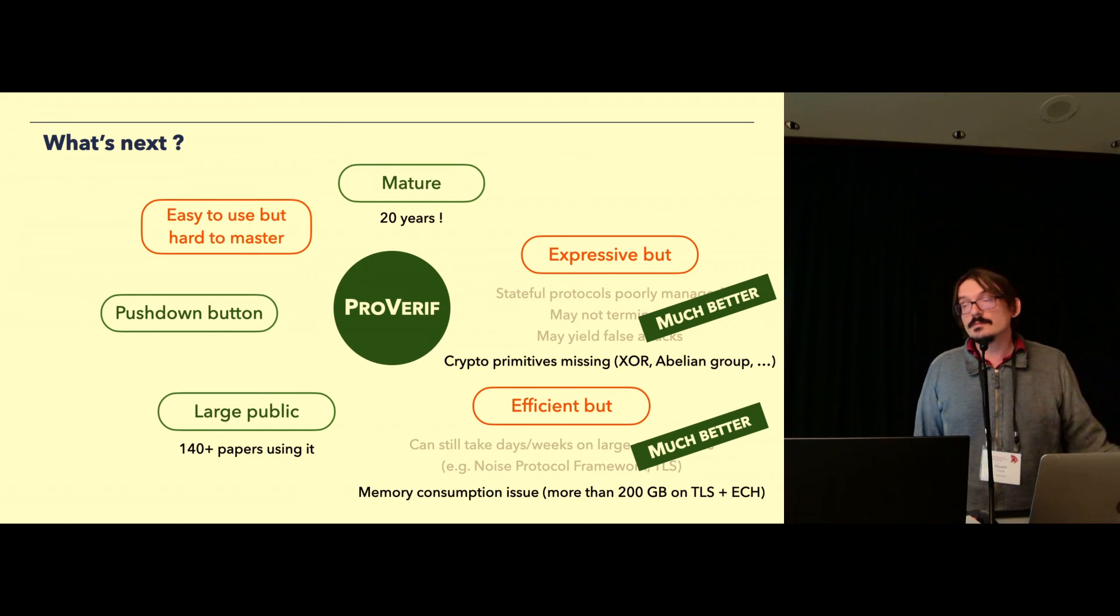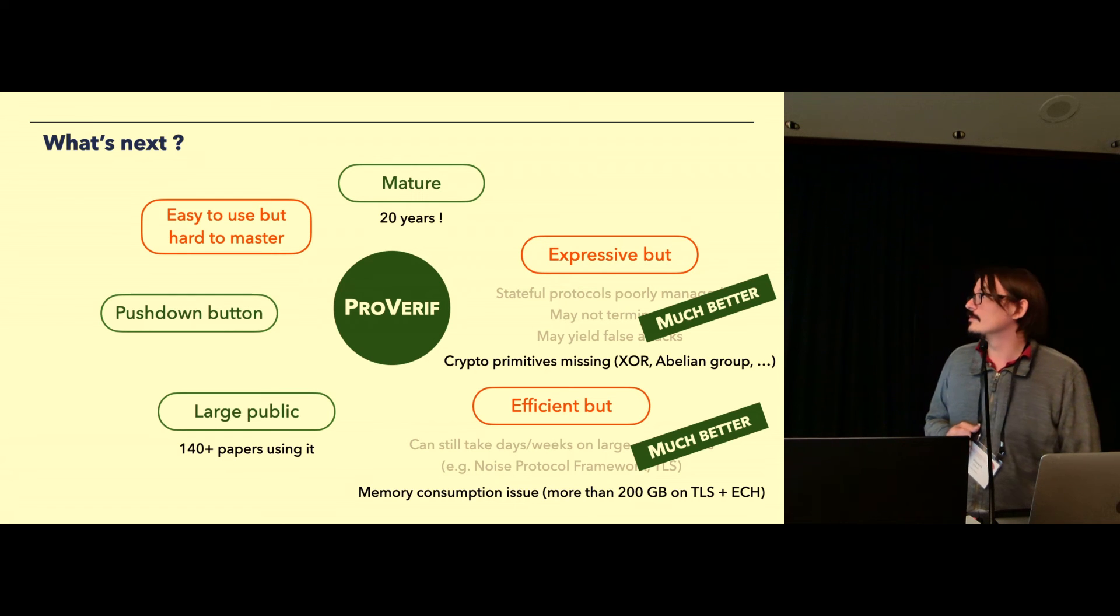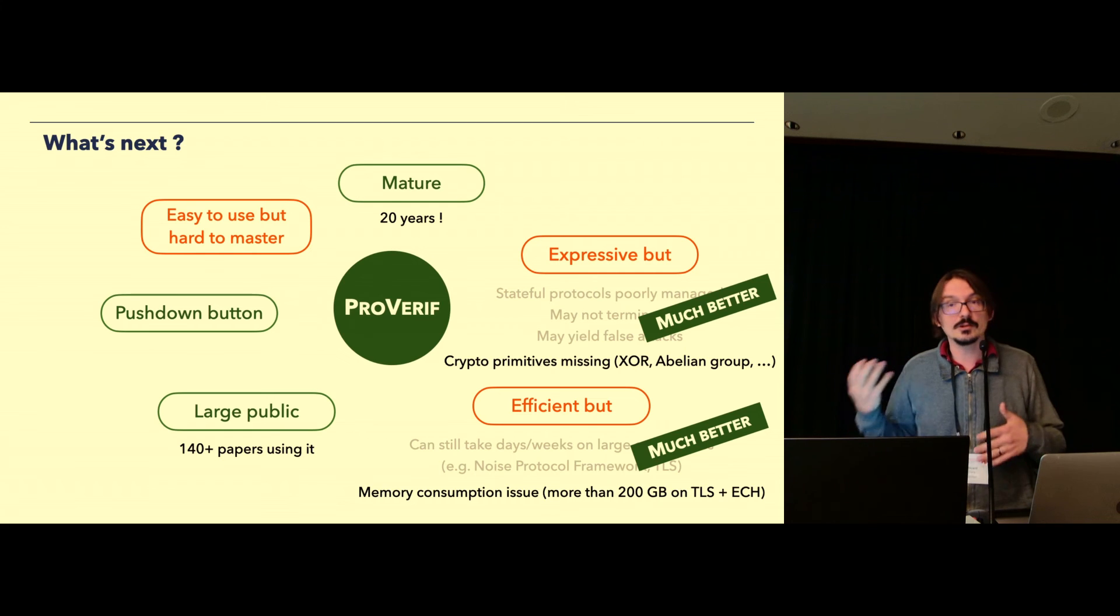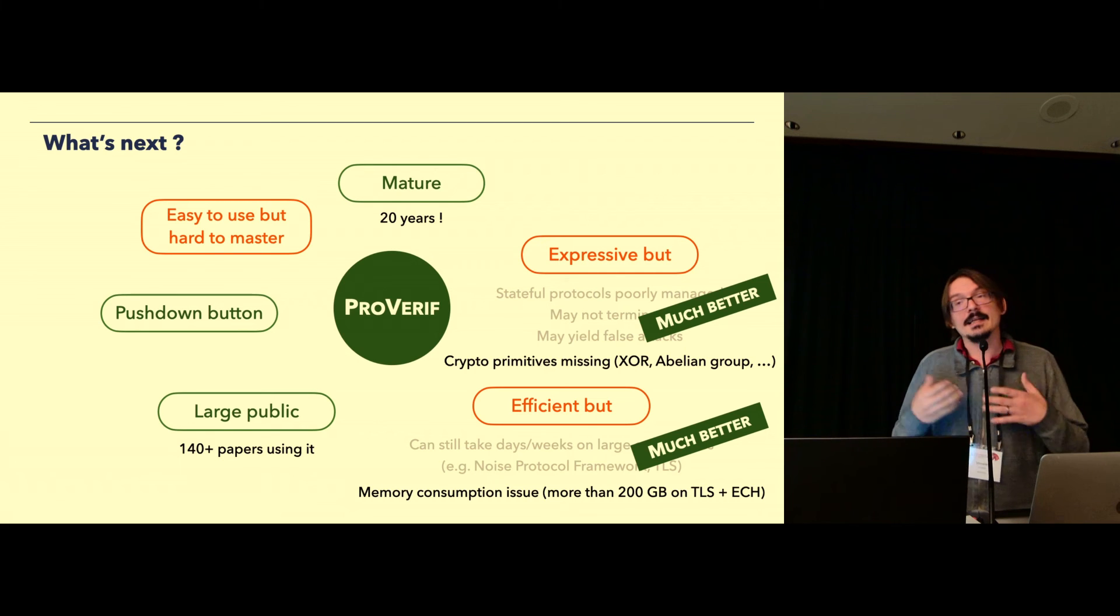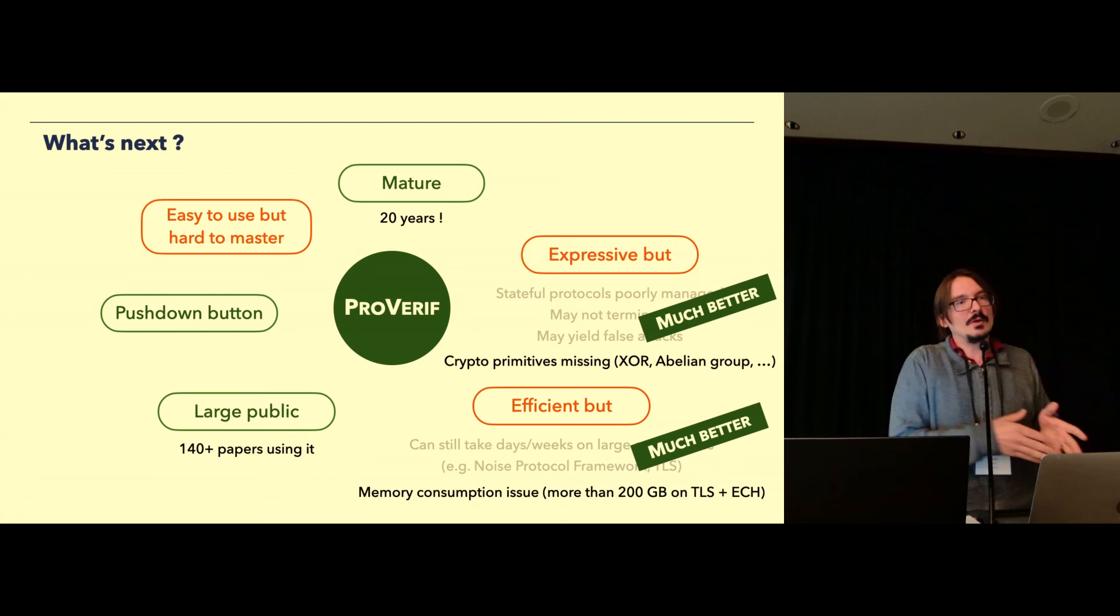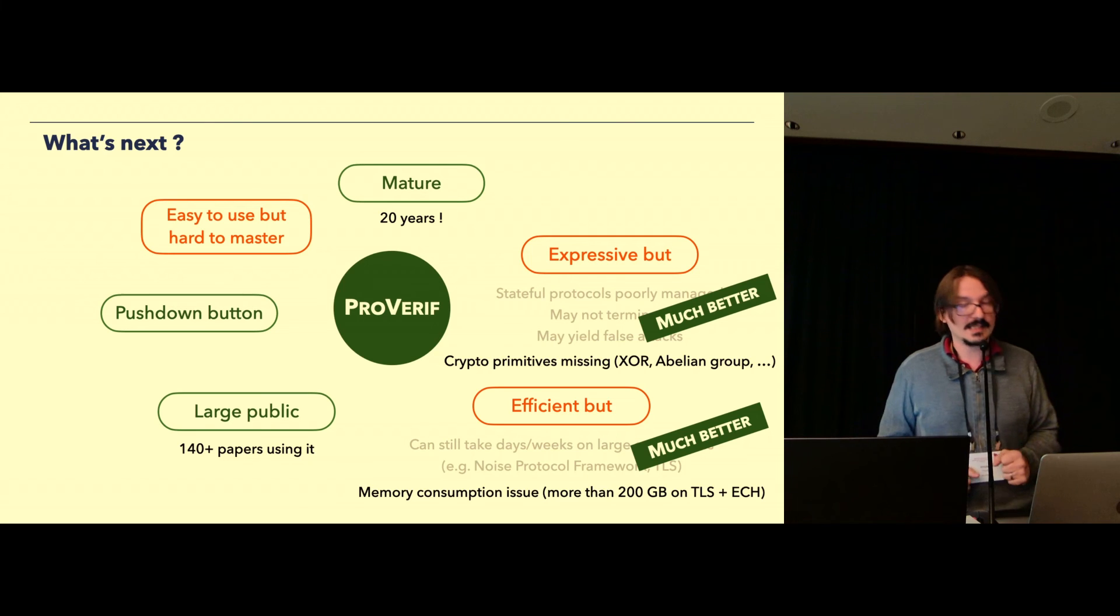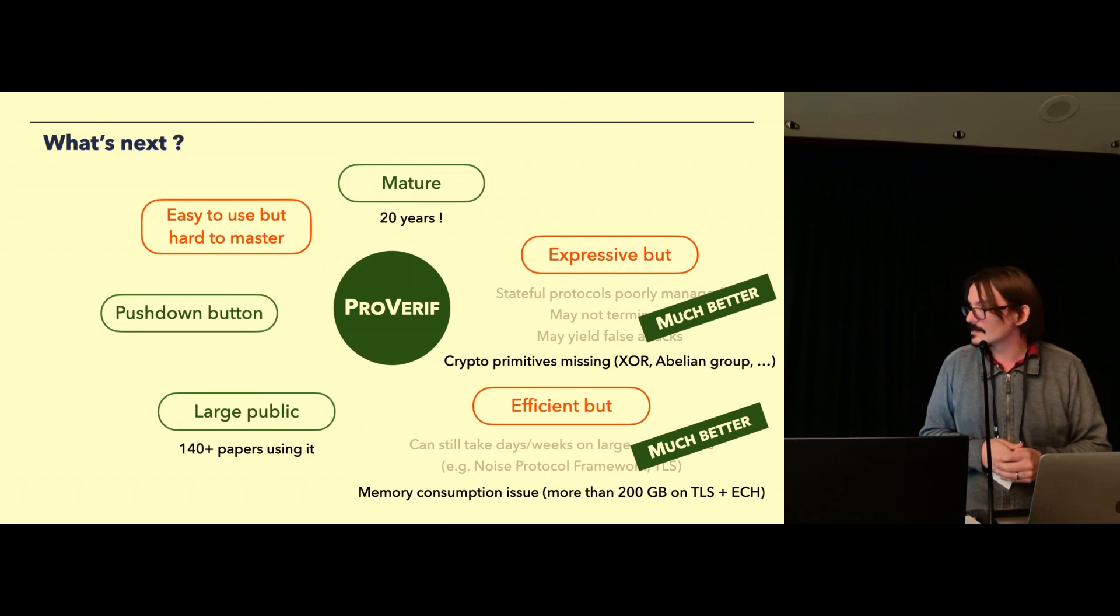However, there's still something that we're still not able to do, and we're working on it. Like, for example, some cryptographic primitives are missing. And I'm thinking, for example, of primitives using abelian groups, XOR. And also in terms of efficiency, now that ProVerif generates clauses much faster, we ended up having not a time problem but a memory problem. And on the example of TLS with ECH, we kind of blew up the memory of our server. After 200 and 300 gigabytes, the server was like, oops, stop, I stopped. So we are currently working to make this a bit better.